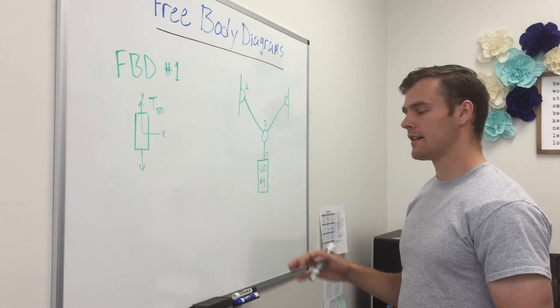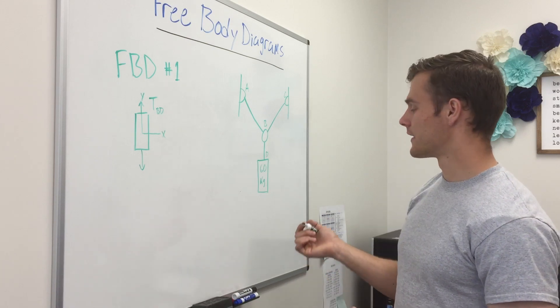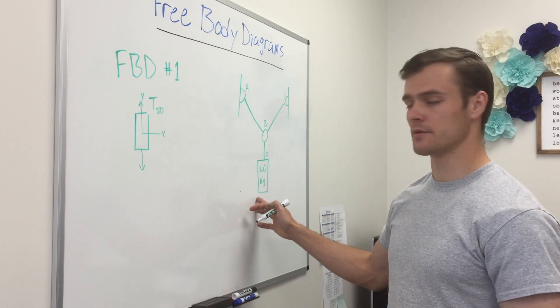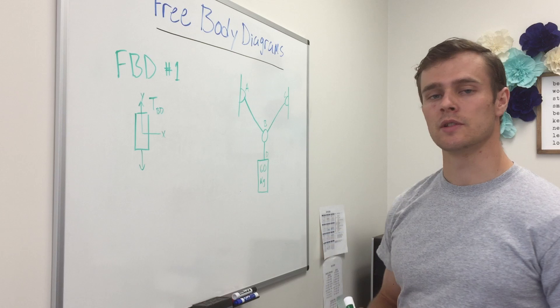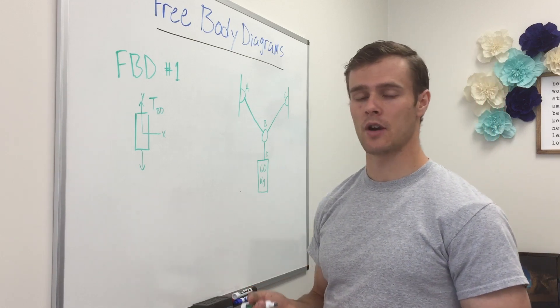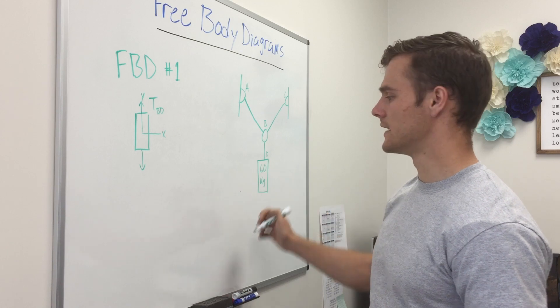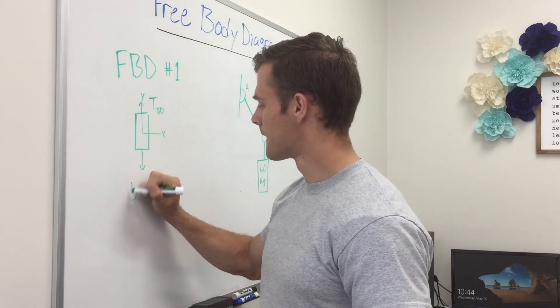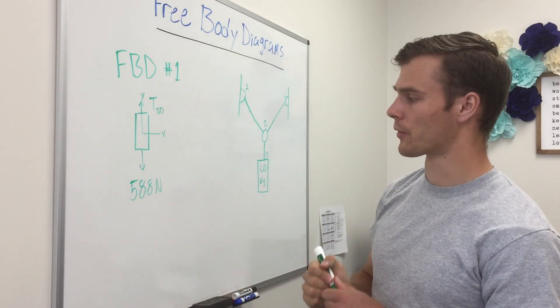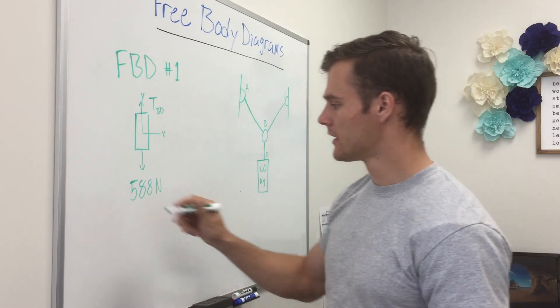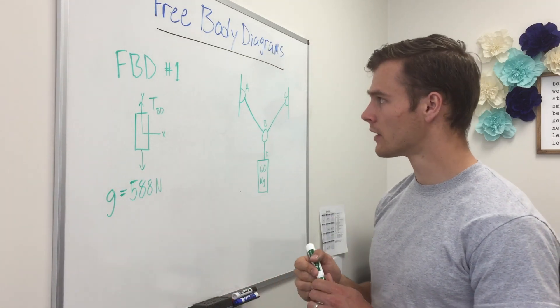And so we know that in the metric system or the SI system that our units of force is not kilograms but newtons. And the way we get from kilograms to newtons is we multiply it by the constant of gravity which is 9.8. So if we multiply 9.8 by 60 we will end up getting 588 newtons. So that will be our force pulling down by gravity and we'll label that as gravity.